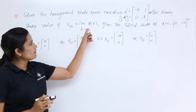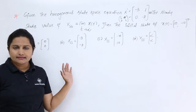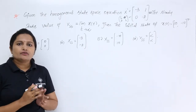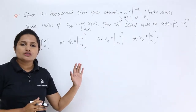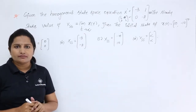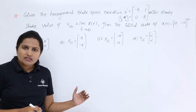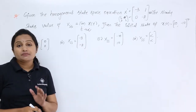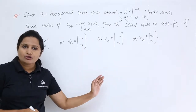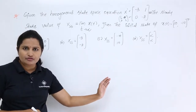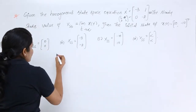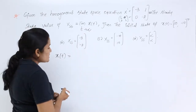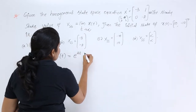If we know x(t), we can easily find out x_ss by that equation. But here we do not know x(t). So to find x(t), we use the homogeneous solution. For any state model, the homogeneous solution is x(t) = e^(At) into x(0).